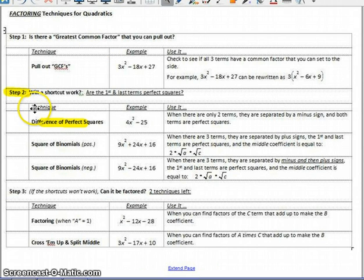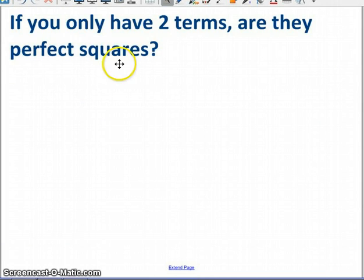Now the second technique, taking the difference of perfect squares. This works if you have two terms. It only works if you only have two terms, but when you only have two terms, look carefully and see if they happen to be perfect squares. Like in this example, four is a perfect square, x² is a perfect square, and 25 is a perfect square.